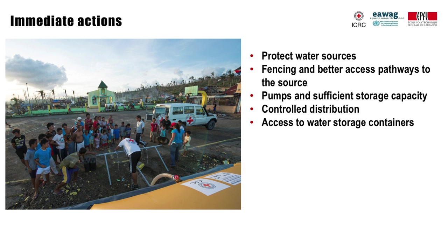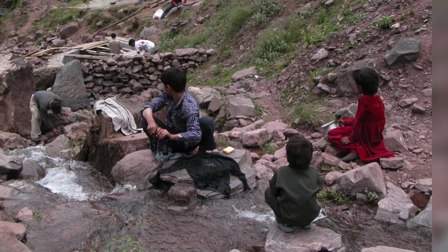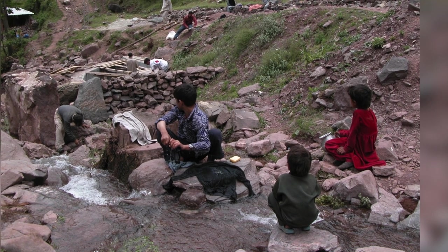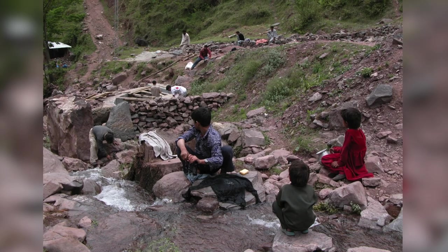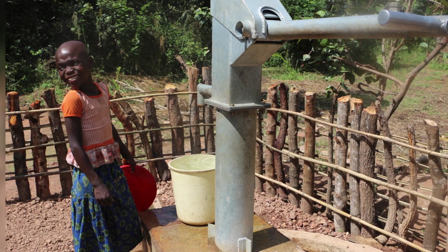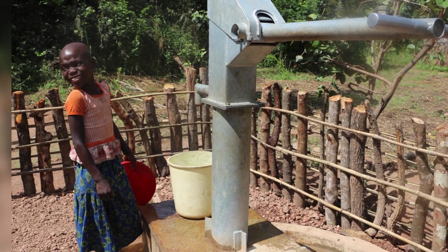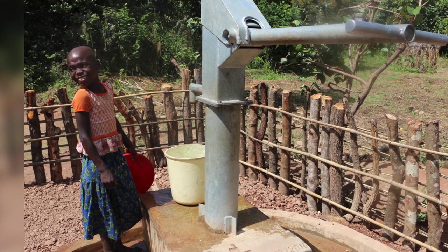It can be important to consider immediate, simple, basic measures to improve the current poor water supply system first, before planning for a more sophisticated, long-lasting infrastructure. Protecting the source is one of the possible measures. Relocating defecation or washing areas as well as animal access downhill can have a strong immediate impact on water quality. Fencing, retaining walls, runoff trenches around springs, as well as walls and better access pathways to open wells are other examples of immediate improvement measures.